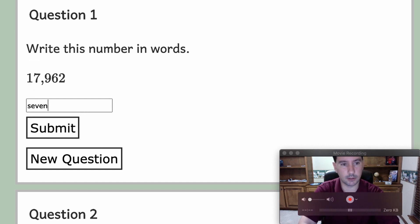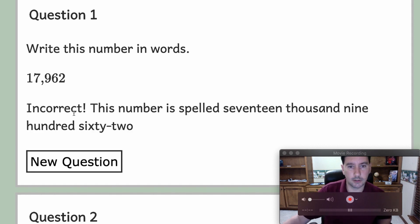There should be a dash there between the sixty and the two. Incorrect, this number is spelled seventeen thousand nine hundred sixty-dash-two. Yeah, so that's the correct spelling.